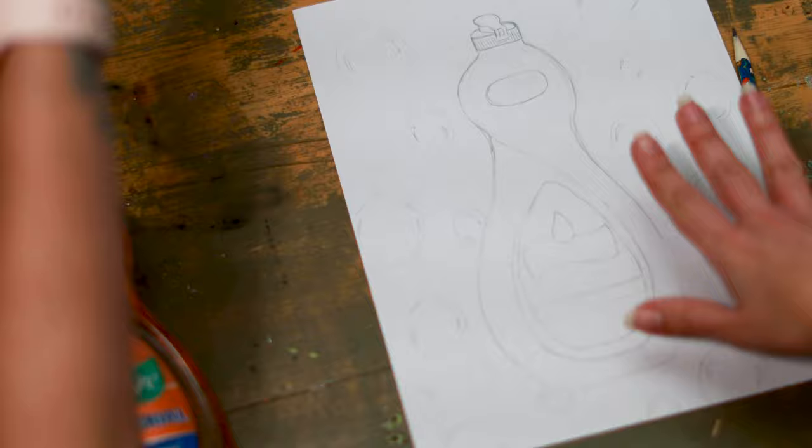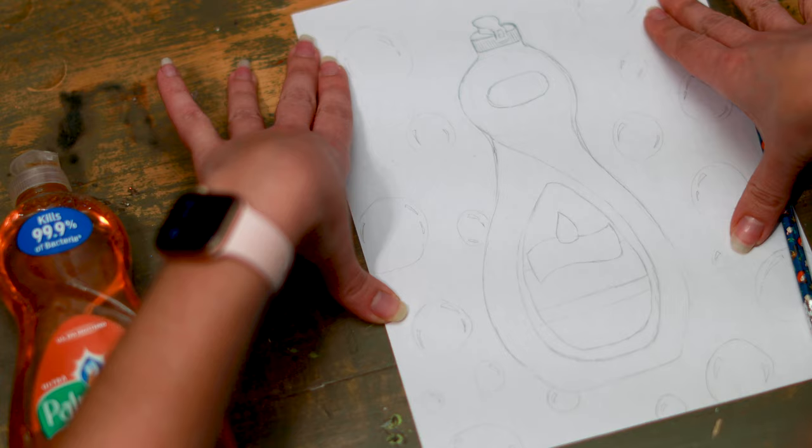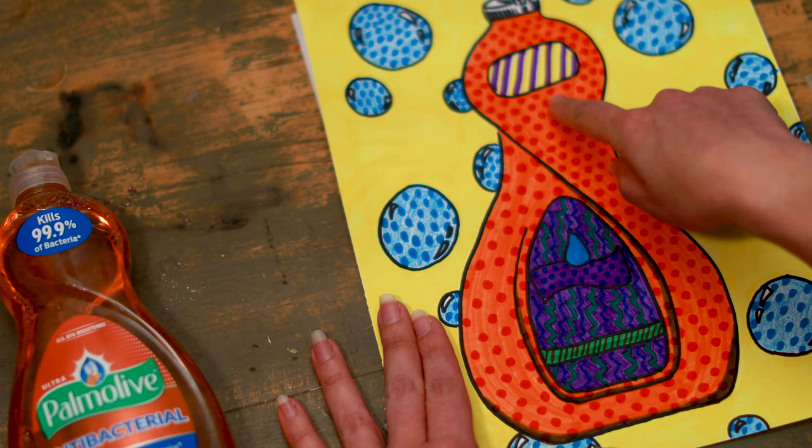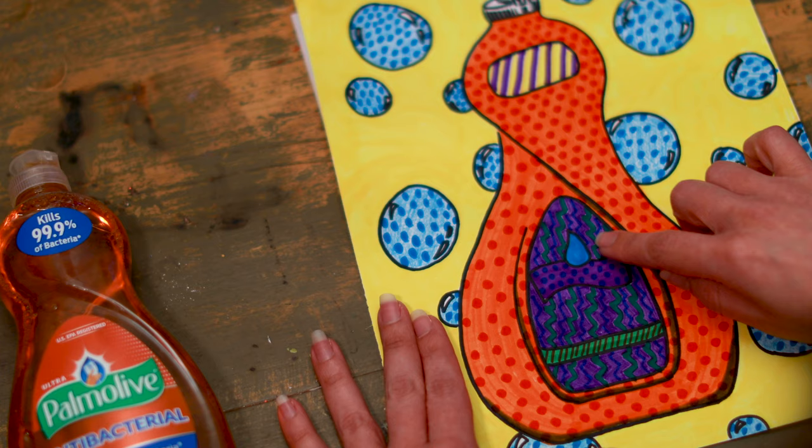So this is my sketch right before I add in my color. And the final product should look something like this. So you guys can see I did incorporate a lot of the little Ben-Day dots within my bubbles. Also within the soap container itself, I added some parallel lines and I added some little zigzag lines also within the color process.